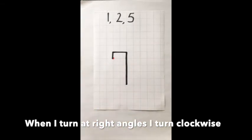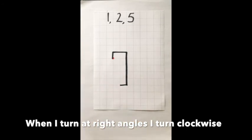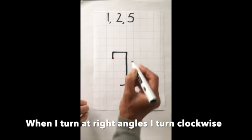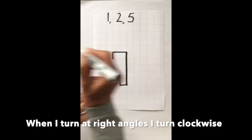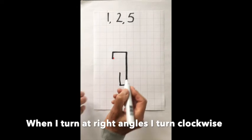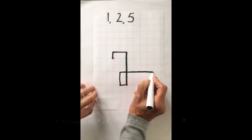From that end point, I'm going to repeat that set of instructions. So I'm going to turn at right angles one space. And now I'm going to turn at right angles, and go up two spaces. Turn at right angles, and go five spaces. One, two, three, four, five.